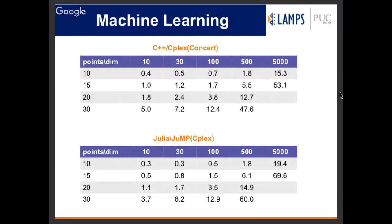Another application is a machine learning code using support vector machines. Imagine a matrix where columns are the problem dimensions and features, and rows are the data points. We increased those dimensions and points to see how JuMP and Julia behave compared to CPLEX and C++. For small problems there's no difference at all; for larger problems there is some difference, but not a big one.